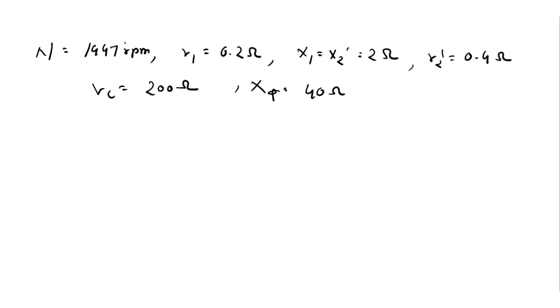Mechanical loss is equal to 1000 watts. ns is equal to 120 divided by P, which is equal to 120 multiplied by 50 divided by 4, which is equal to 1500 rpm.